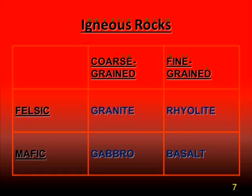We can take all of this information about mafic and felsic igneous rocks and put it into a table. This table represents those four different types of rocks we just discussed. We see our felsic rocks that are coarse-grained like granite or fine-grained like rhyolite, and our mafic rocks that are coarse-grained like gabbro or fine-grained like basalt. This makes a useful way to display that information. So what we've learned is that we can take igneous rock and divide it into two categories — felsic or mafic — depending on its chemical composition.